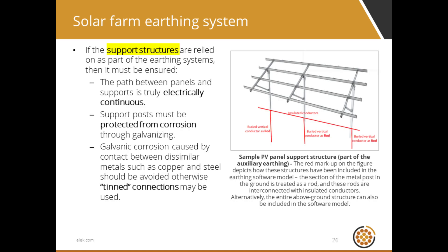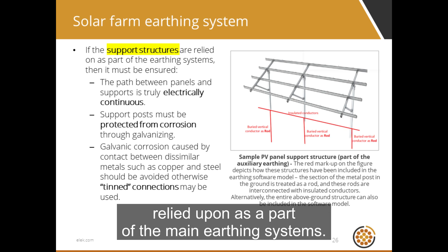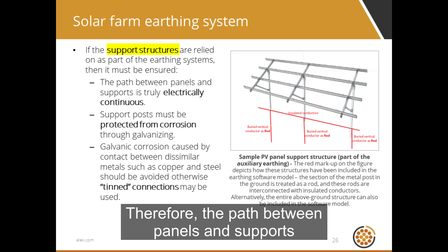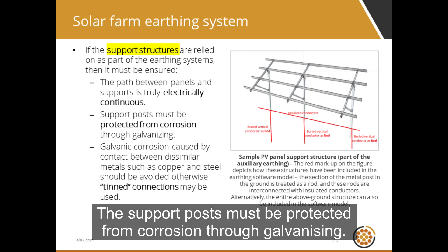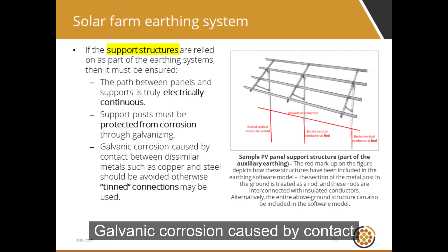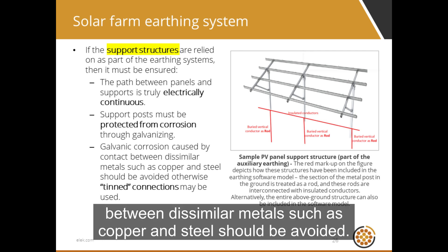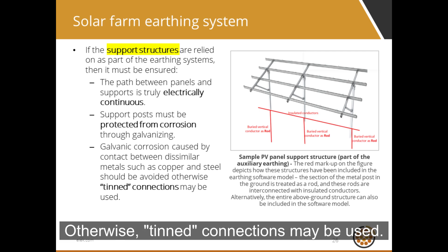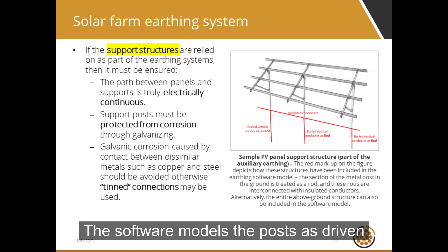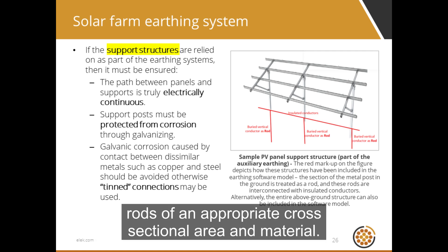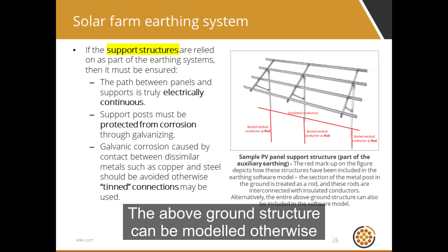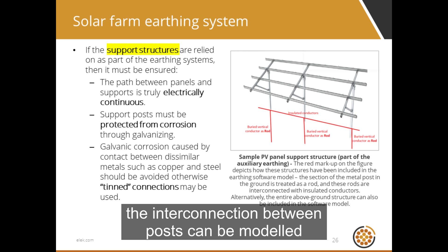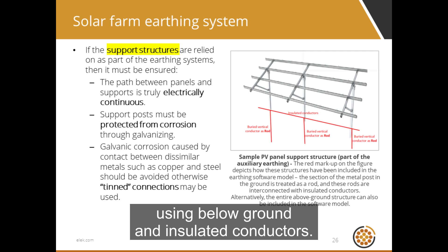The panel support structures are often relied upon as part of the main earthing systems; therefore, the path between panels and supports must be electrically continuous. The support posts must be protected from corrosion through galvanizing. Galvanic corrosion caused by contact between dissimilar metals such as copper and steel should be avoided — otherwise, tin connections may be used. The software model models the posts as driven rods of an appropriate cross-sectional area and material. There are two ways of modeling the support structures: the above-ground structure can be modeled, or the interconnection between posts can be modeled using below-ground insulated conductors.